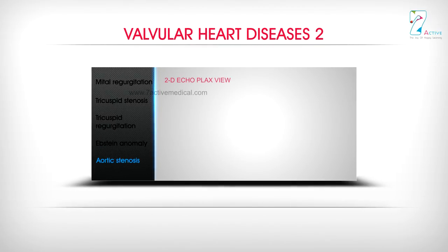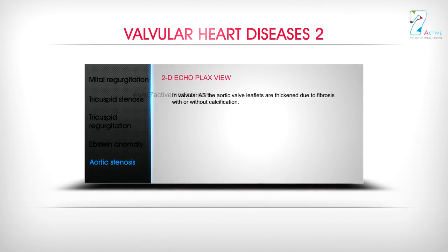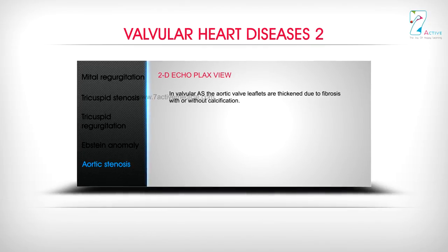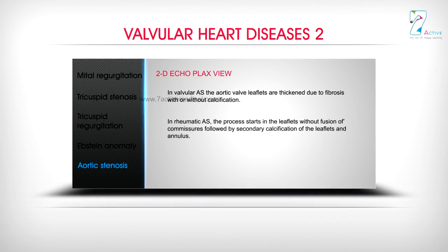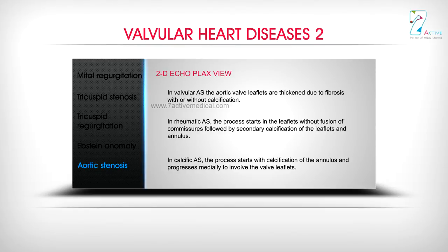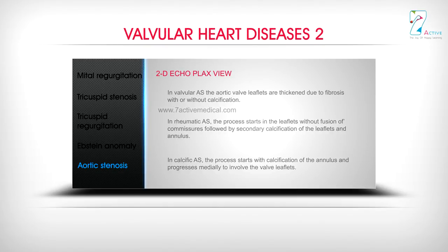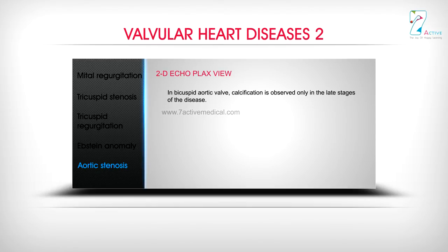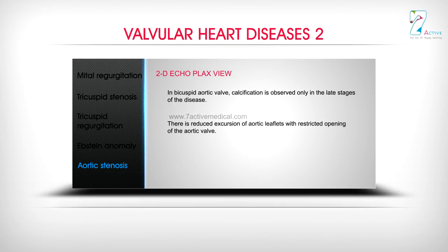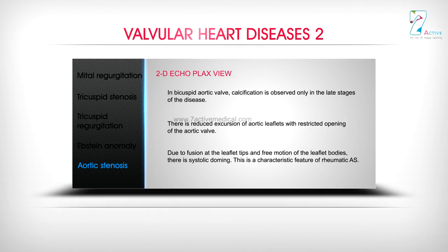Aortic Stenosis — 2D Echo PLAX View: In valvular AS, the aortic valve leaflets are thickened due to fibrosis with or without calcification. In rheumatic AS, the process starts in the leaflets without fusion of commissures, followed by secondary calcification. In calcific AS, the process starts with calcification of the annulus and progresses medially to involve the leaflets. In bicuspid aortic valve, calcification is observed only in late stages. There is reduced excursion of aortic leaflets with restricted opening. Due to fusion at leaflet tips with free motion of the leaflet bodies, there is systolic doming — a characteristic feature of rheumatic AS.